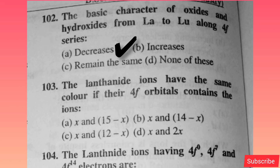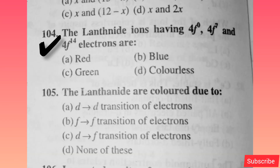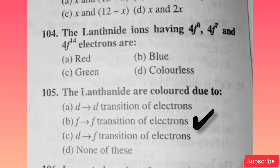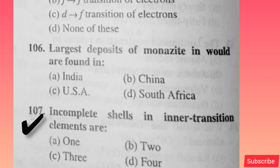The basic character of oxides and hydroxides from La to Lu along the 4f series — option A is correct. Lanthanide ions have the same color if their 4f orbitals contain the same number of electrons — option B is correct. Lanthanide ions with 4f0, 4f7, and 4f14 electrons are colorless — option D is correct. Lanthanides are colored due to — option B is correct. Largest deposits of monazite are found in — option C is correct. Incomplete shells in inner transition elements are — option B is correct.